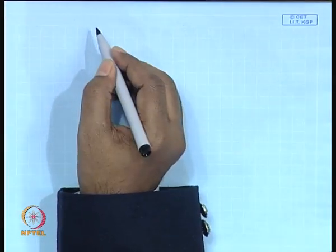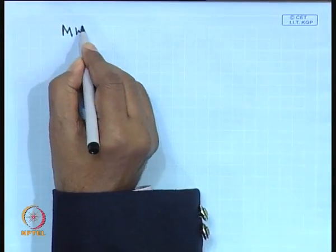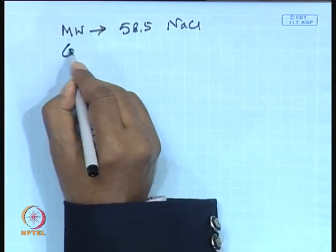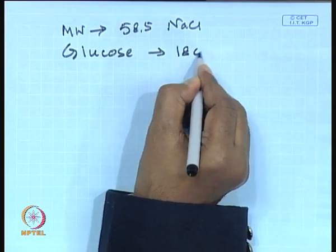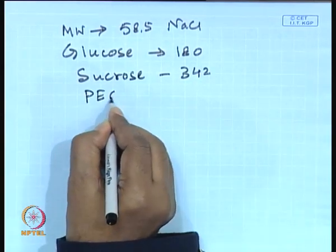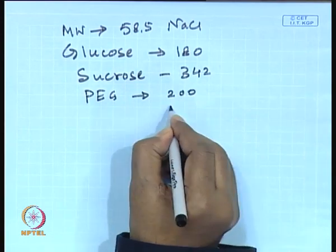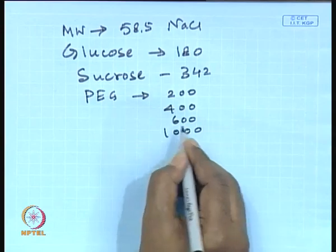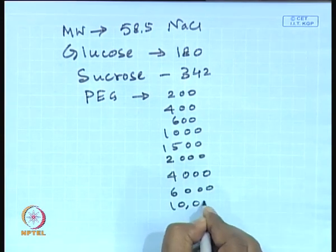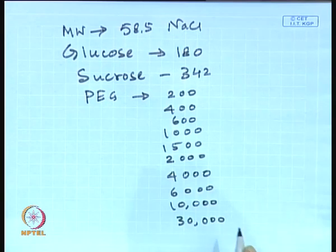To find out the molecular weight cut-off of a particular membrane, one must prepare solutions of solutes having different molecular weights. For example, starting from sodium chloride at MW 58.5, then glucose at MW 180, sucrose at MW 342, and PEG of various molecular weights — 200, 400, 600, 1000, 1500, 2000, 4000, 6000, 10,000, 30,000. Various molecular weight fractions of polyethylene glycol are available commercially.